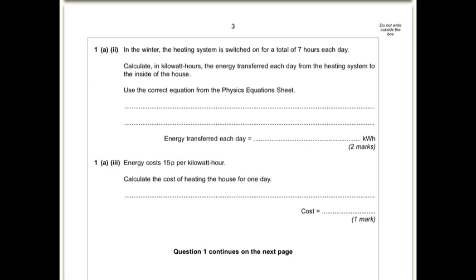So moving on, the heating system switched on for 7 hours a day, calculated in kilowatt hours the energy transferred. So use the correct equation from the physics equation sheet. Now that equation is energy equals power times time. The power you've just worked out, which is energy transferred per second, was 5 from your previous answer, times 7 hours. Because we've got 5 kilowatts times 7 hours equals 35 kilowatt hours.